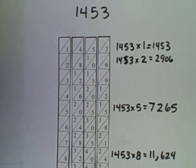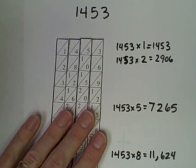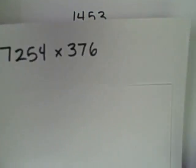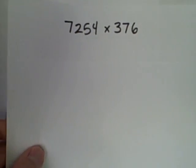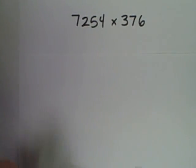If I want to use Napier's rods to multiply a pair of numbers, such as 7,254 times 376, I'll represent one of the numerals, maybe the first factor.